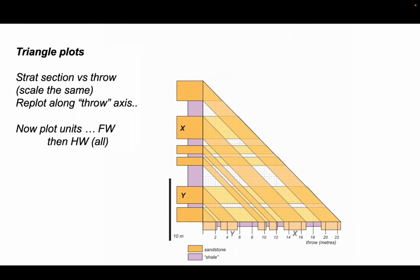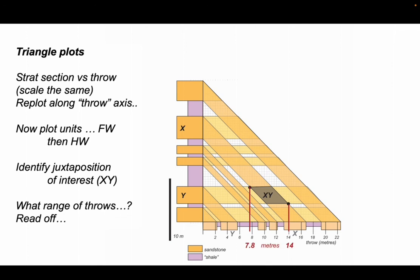Now let's see where the juxtaposition of sandstone X and sandstone Y plot. It's this domain here. We can ask ourselves over what range of throws does this juxtaposition occur. I've picked out the end members or extreme values of this domain, and we can read off what those represent in terms of throw from the throw axis. We see that X and Y are juxtaposed when a fault has a throw somewhere between 7.8 and 14 meters.